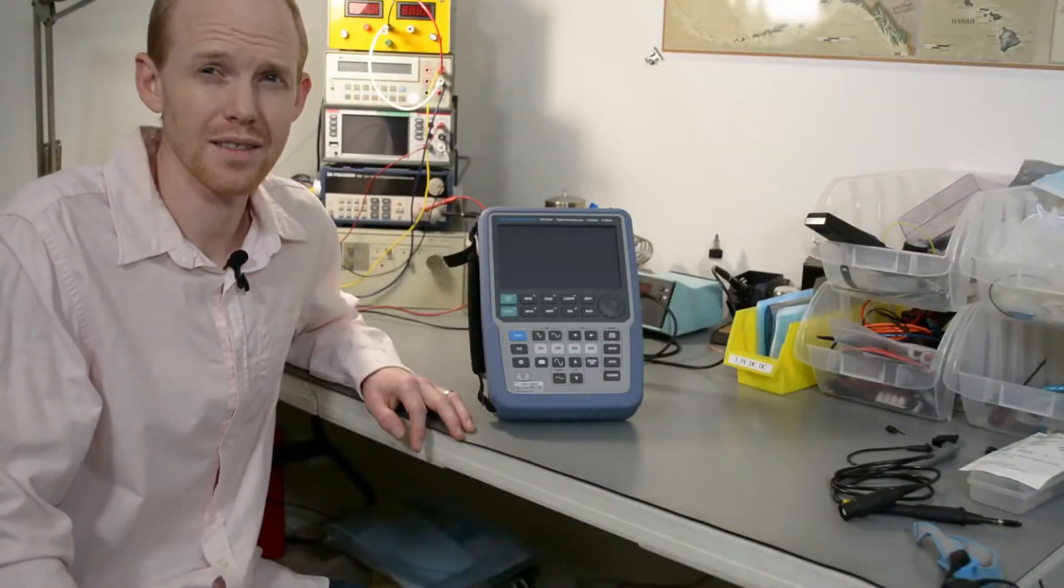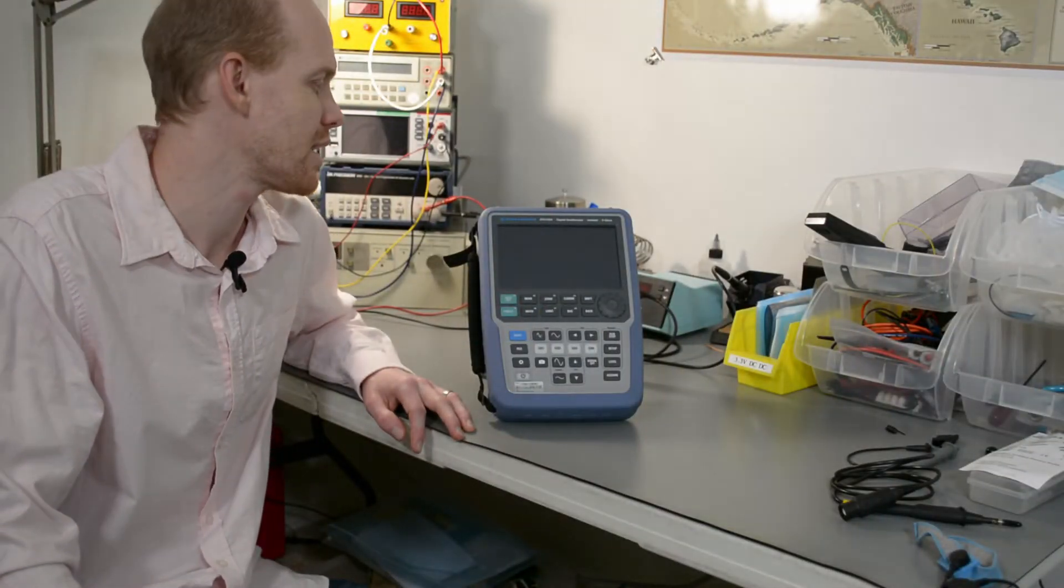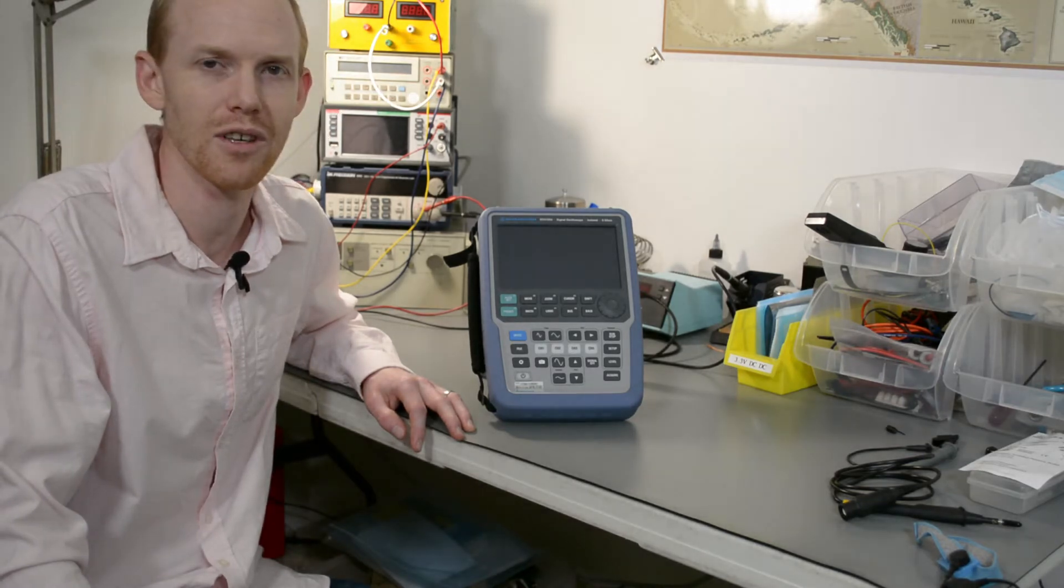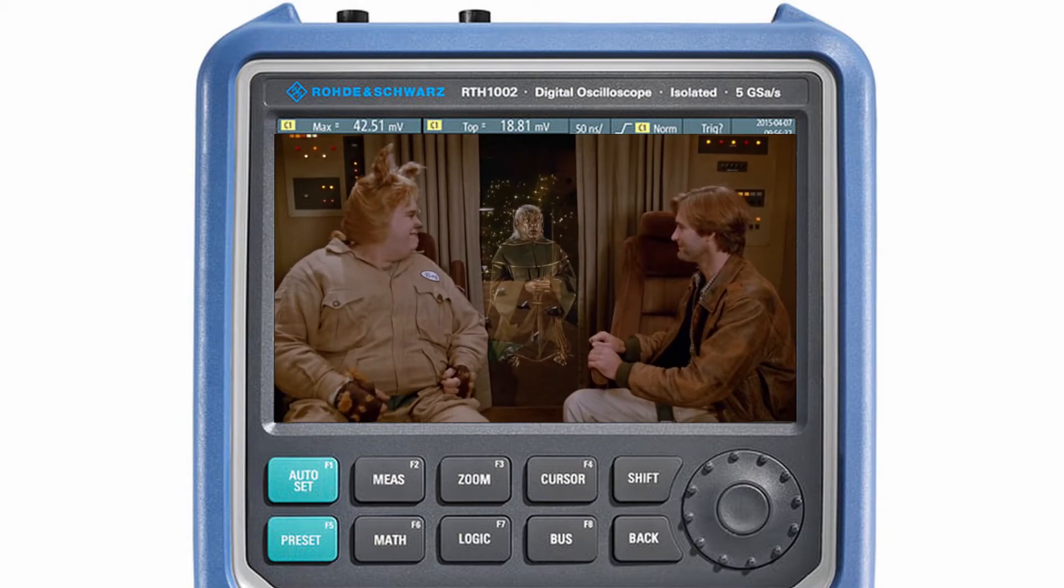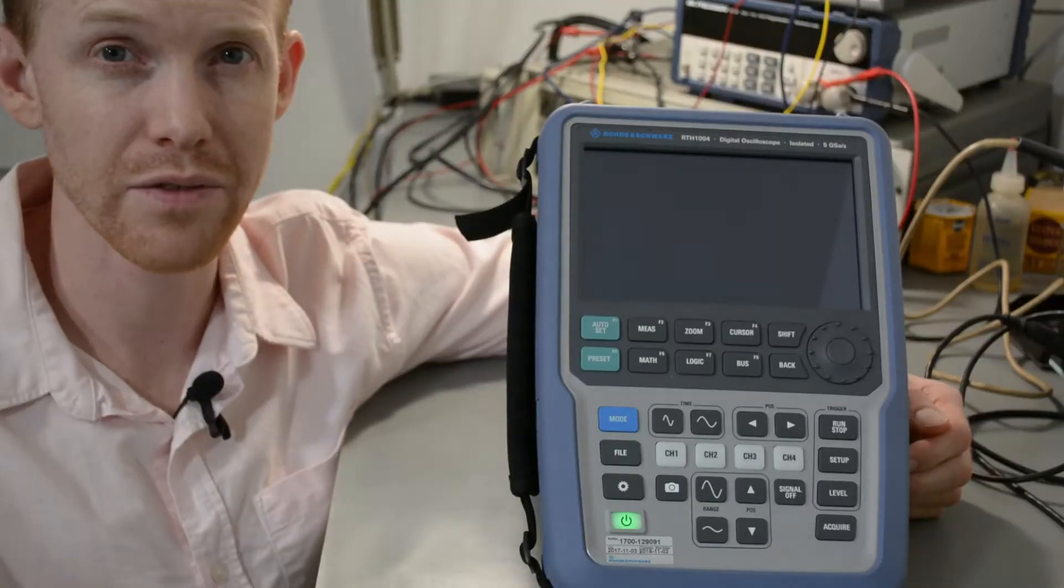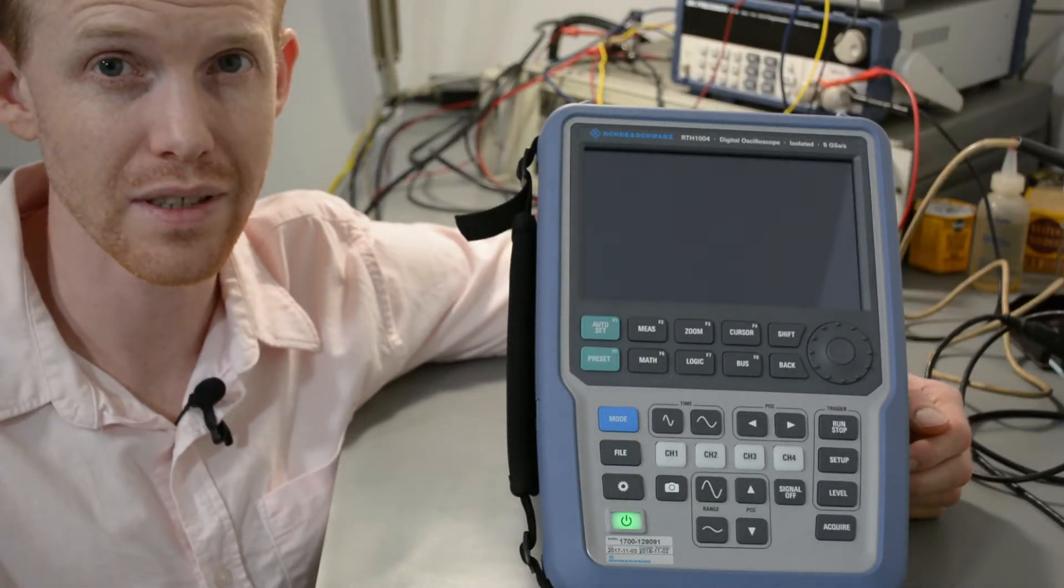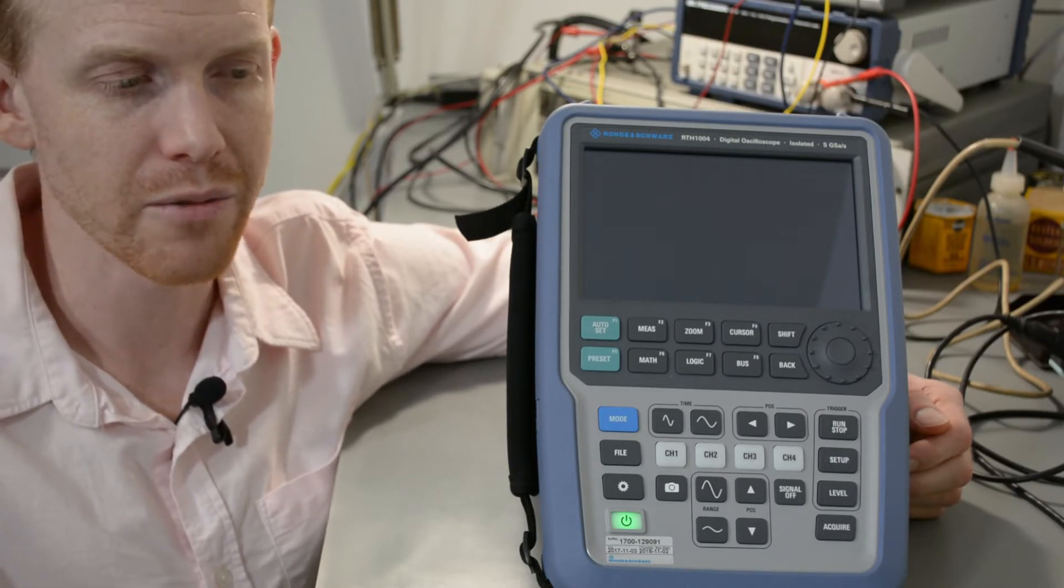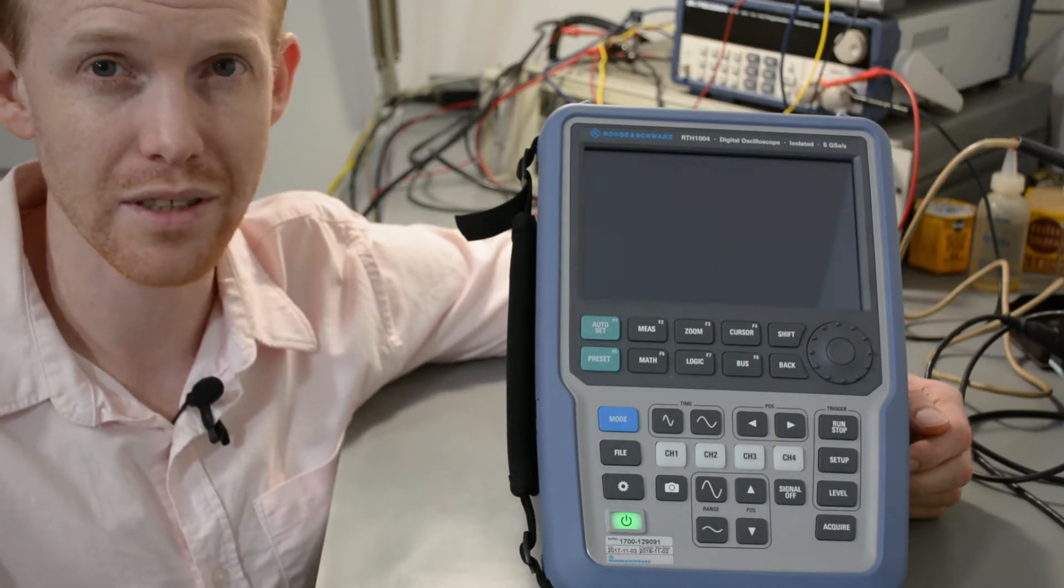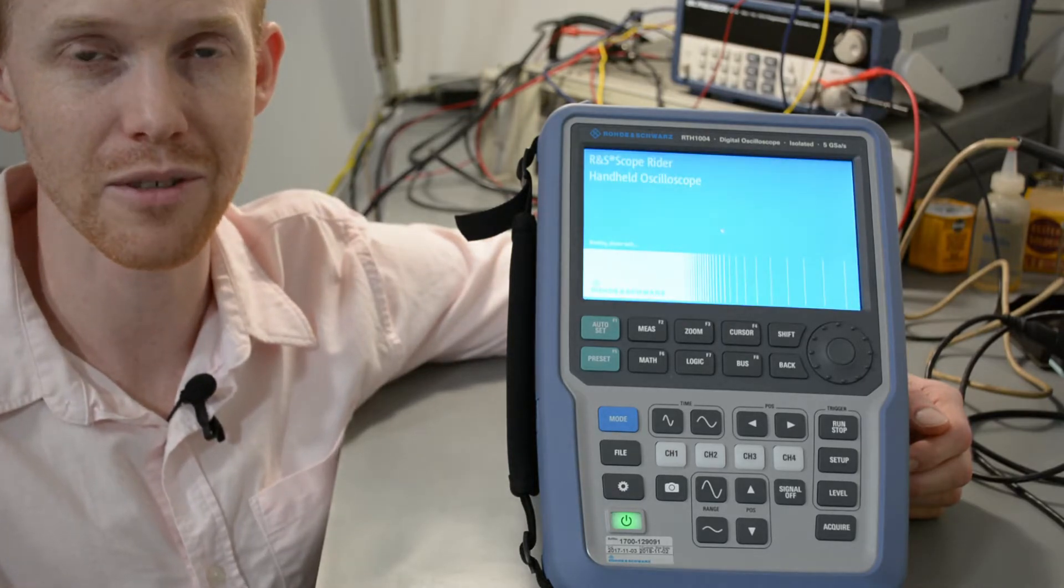And here it is, the latest edition of my test equipment, the Scope Rider RTH-1004 by Rohde and Schwarz. So I'll give you a brief tour of the scope and tell you why I think it's going to be the best scope for my needs. And then we can look at some of its features, including its interface with the computer, and measure some waveforms.